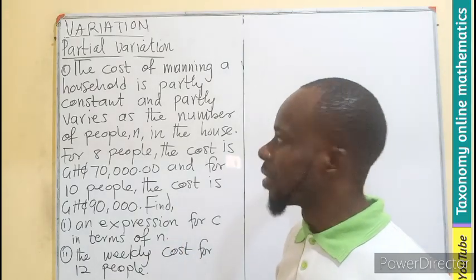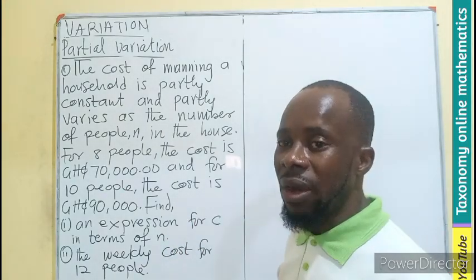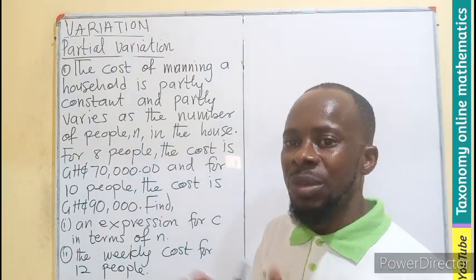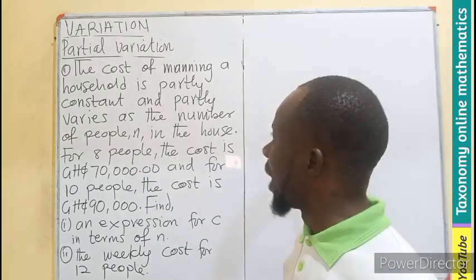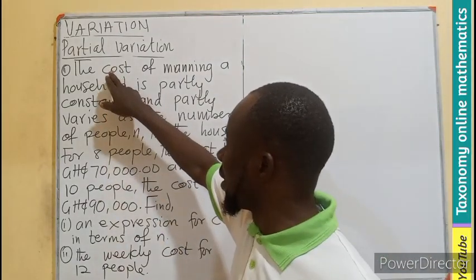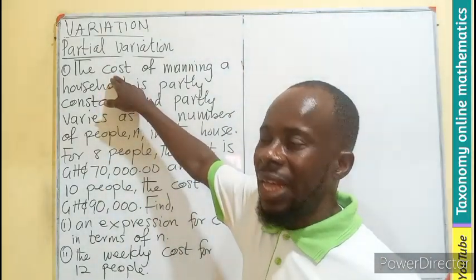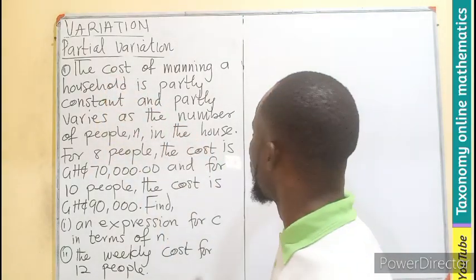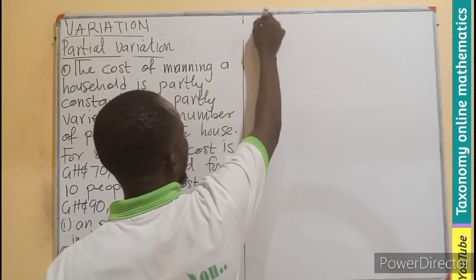And hence find the weekly cost for 12 people. I mentioned in the previous lesson that questions concerning partial variation will always relate to simultaneous equations. So let's first get the equation. Since we are using C as the dependent variable, we start with C equals to.